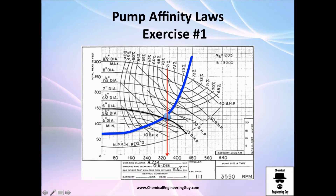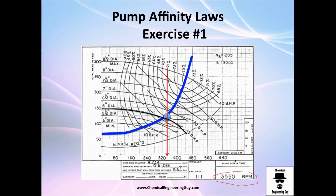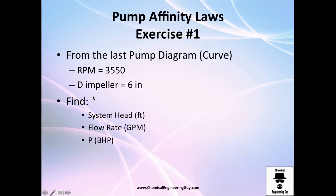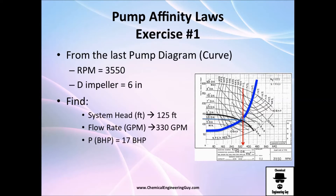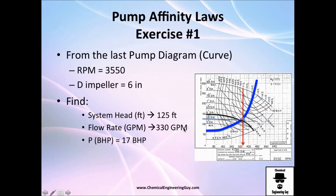Exercise 1: we are currently operating at the intersection of the system curve and the pump curve — that intersection defines our operating flow rate. From the pump diagram, we have an angular velocity of 3500 RPM and an impeller size of 6 inches. The system head is about 125 feet, the volumetric flow rate reads directly off the x-axis at about 313 gallons per minute, and the power is between the 15 hp and 20 hp lines, so approximately 17 hp.